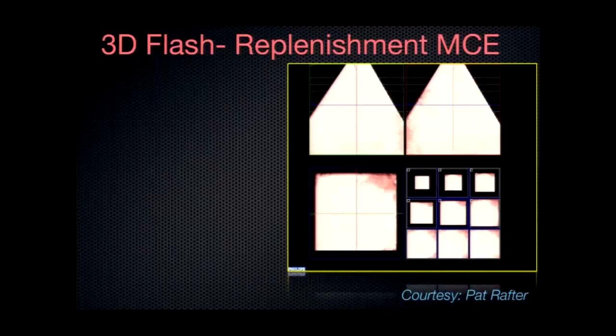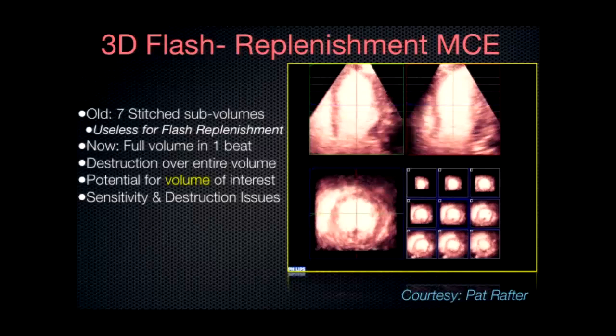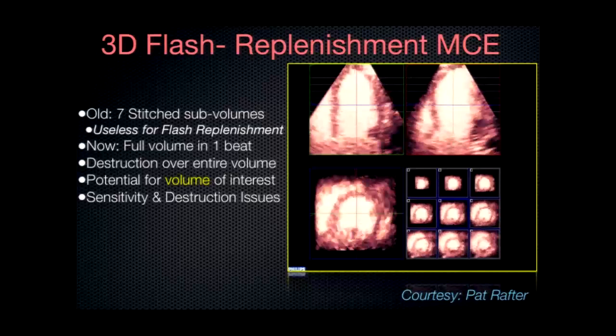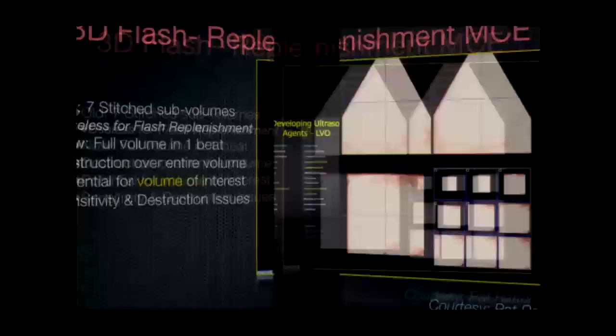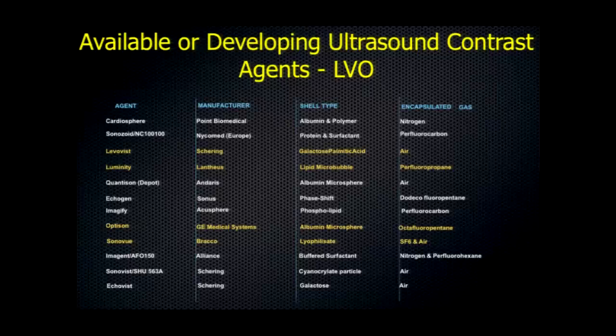And now, as you'll hear, what we can do is image myocardial perfusion in 3D echo, and so this is from a full-volume data set during a contrast injection using flash replenishment imaging. You'll be hearing more about this later on in this session. So we've come a huge distance in a relatively short period of time in terms of the use of contrast agents.